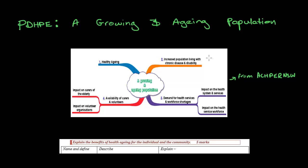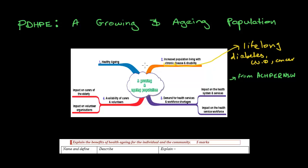The first challenge is the increased population living with chronic disease and disability. Chronic means lifelong. Chronic diseases would include something like diabetes, CVD, and cancer. This increased population living with chronic disease and disability derives from the growing and aging population — that's our main thing we need to lead back to.